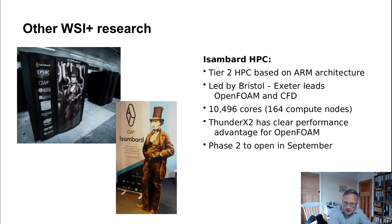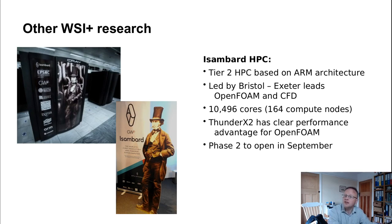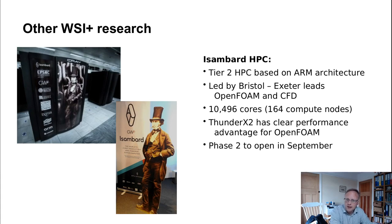Something else which might be of interest is the Isambard project. I'm part of the successful Tier 2 bid on Isambard. Isambard is a HPC facility based on ARM architecture chips, intended as a comparative platform, so there are nodes with ARM chips and nodes with other architectures. Led by Bristol, but Exeter leads on OpenFOAM and CFD in general. The ARM architecture is proving very successful — the ThunderX2 chips have a clear performance advantage when running OpenFOAM, which is very interesting.